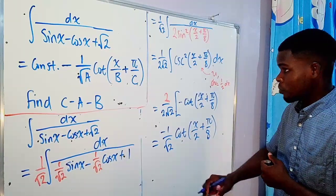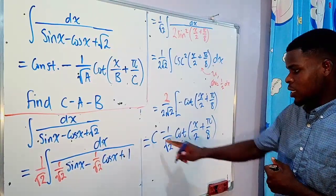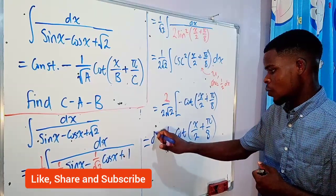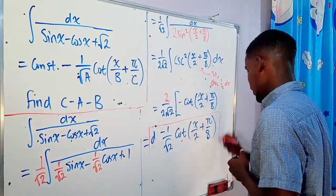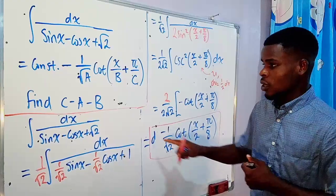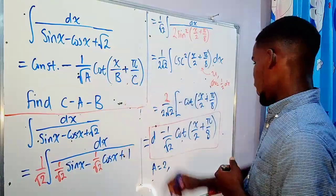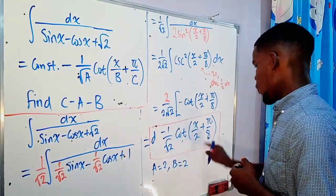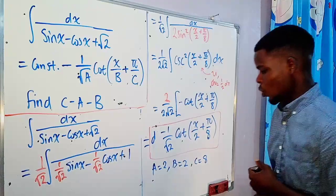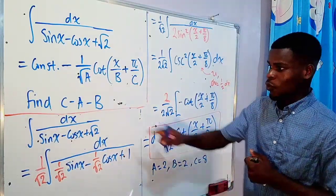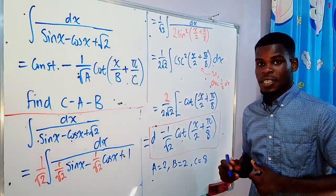Since this is an indefinite integral we add an arbitrary constant (using d to avoid confusion with our unknown c). Comparing with the given form, we identify: a = 2, b = 2, and since pi/c = pi/8 we get c = 8. Therefore c minus a minus b equals 8 minus 2 minus 2, which equals 4.